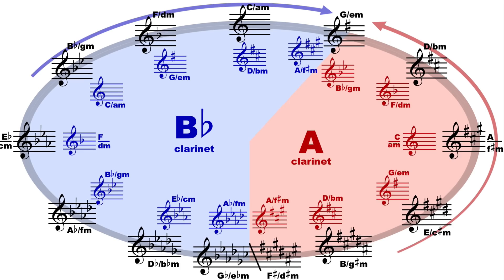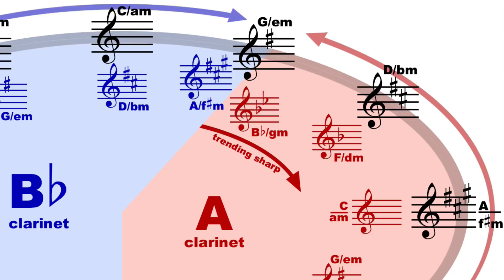If you're writing a piece that modulates to the five, like a sonata allegro, then you may want to use the A clarinet for G major, because the music modulates to D major, which is four sharps for a B-flat clarinet but only one flat for an A. But if you're modulating to C or F, then use the B-flat, as much to keep the most familiar instrument in the player's hands as any concern of key.